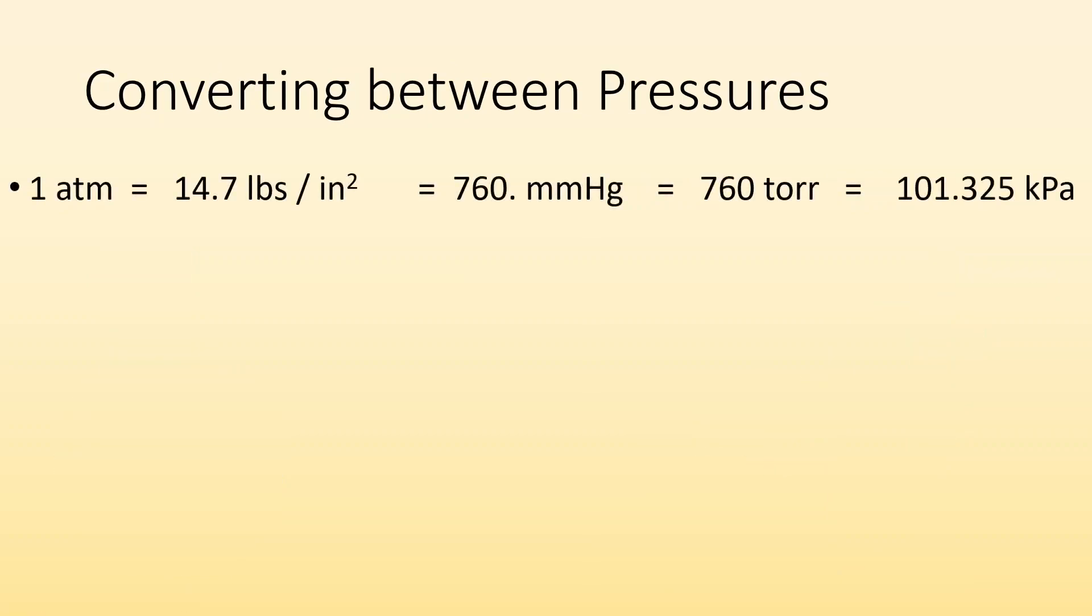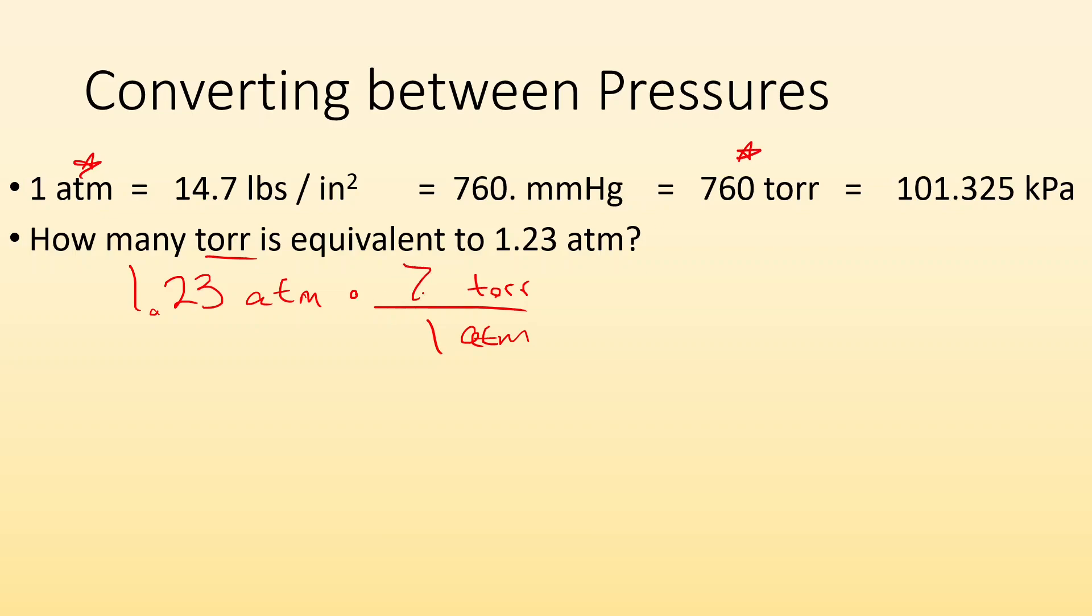We're converting between pressures. So we have all these different units. We know that one atmosphere is 14.7 pounds per square inch. We know that's 760 millimeters of mercury. That's 760 torr. That's 101.325 kilo pascals. So whenever we're given one unit and we got to convert to another we want to remind ourselves of this. So for example how many torr is equivalent to 1.23 atmospheres? Well all right if we're starting with 1.23 atmospheres we want to figure out what conversion factor are we going to need to use. Well if I'm trying to cancel out atmospheres I want to put atmospheres on the bottom. If I'm trying to get torr I want to put torr on top. So I know that one atmosphere is equivalent to 760 torr. So when I do this math the atmospheres will cancel out and the number that I get is 934.8 torr.